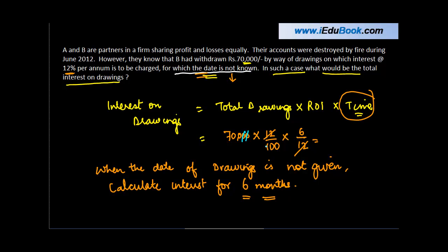This 12 will knock off this 12. One, two zeros will go with these two zeros. So, we are left with 700 into 6 or 4200.